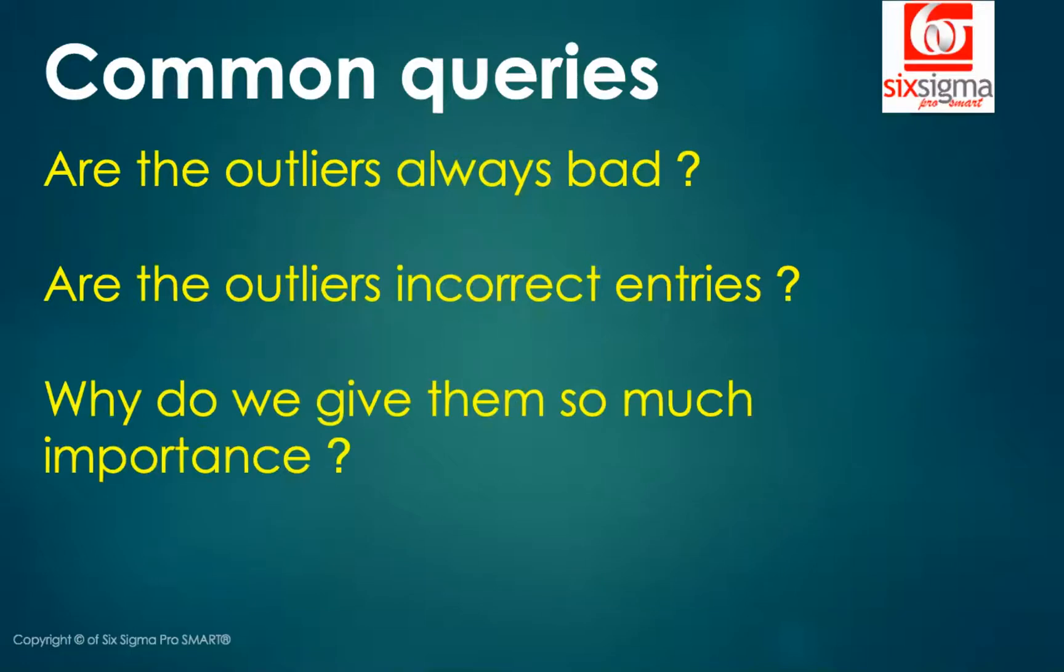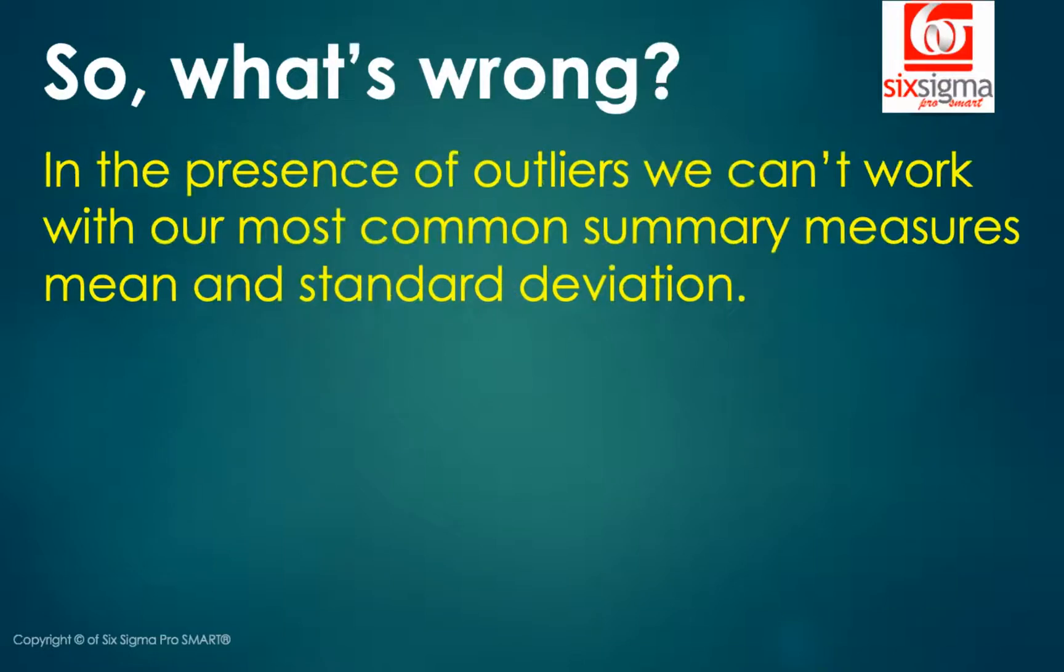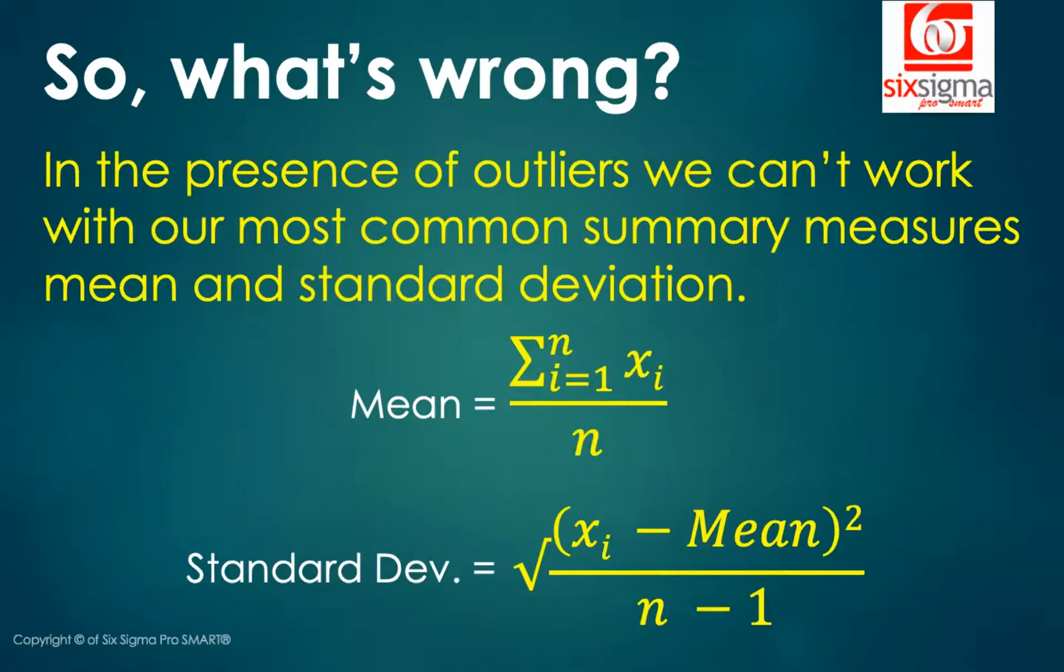Why do we give them so much importance? Now, outliers are given a lot of importance because in the presence of outliers, we can't work with most common summary measures, which are mean and standard deviation. Because if you look at the formula for the mean, it gets influenced by the presence of outliers. Once again, we have discussed this at length in our measures of central tendency video. I'll leave the link in the description. Second is standard deviation. Why is standard deviation a problem? We know about mean. Realize that standard deviation uses mean in its formula. So when you have mean being used and mean itself is influenced by the outliers, standard deviation also gets influenced.